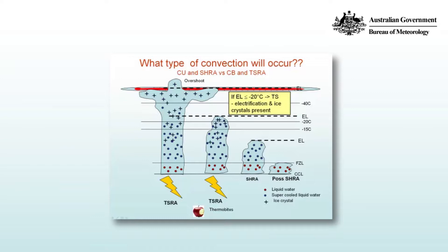This particular thunderstorm on the left passes through that minus 20 degrees Celsius isotherm, so there's electrification, lightning, thunder, an overshooting top, and a cirroform anvil. The next thunderstorm just pushes through the minus 20 degrees Celsius level, so it's still a thunderstorm and still a cumulonimbus, but it has no anvil. Because of significant ice content, it will appear as a glaciated top.